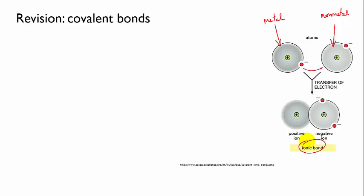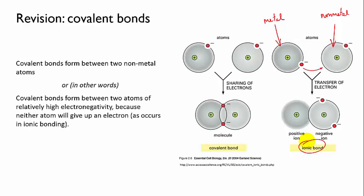However, if both atoms have relatively high electronegativity, it's not energetically favourable for either of them to give up an electron to get a full outer shell. So instead, they share electrons and they complete their outer shells in that way. And this is called the covalent bond.